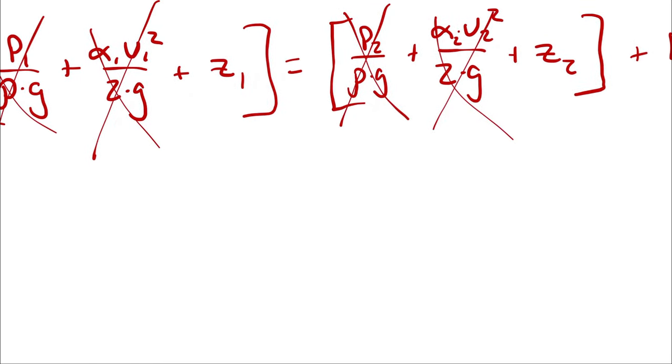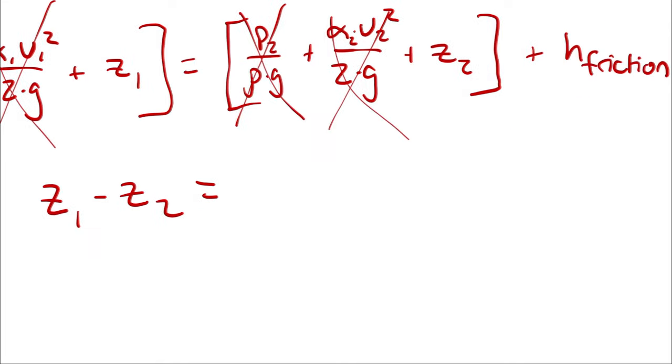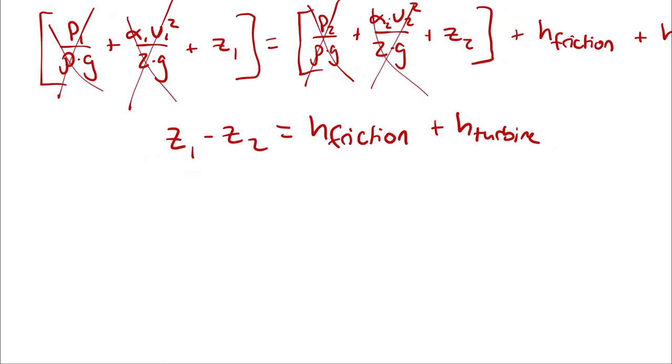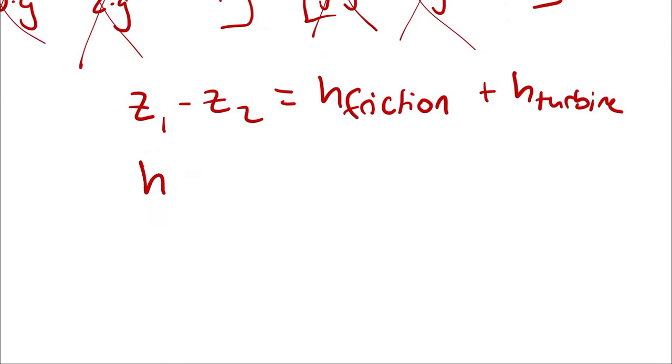Now we just have Z1 minus Z2 is equal to friction head plus turbine head. Turbine work and power is what I'm actually looking for, and the turbine head is going to be what gets me there.